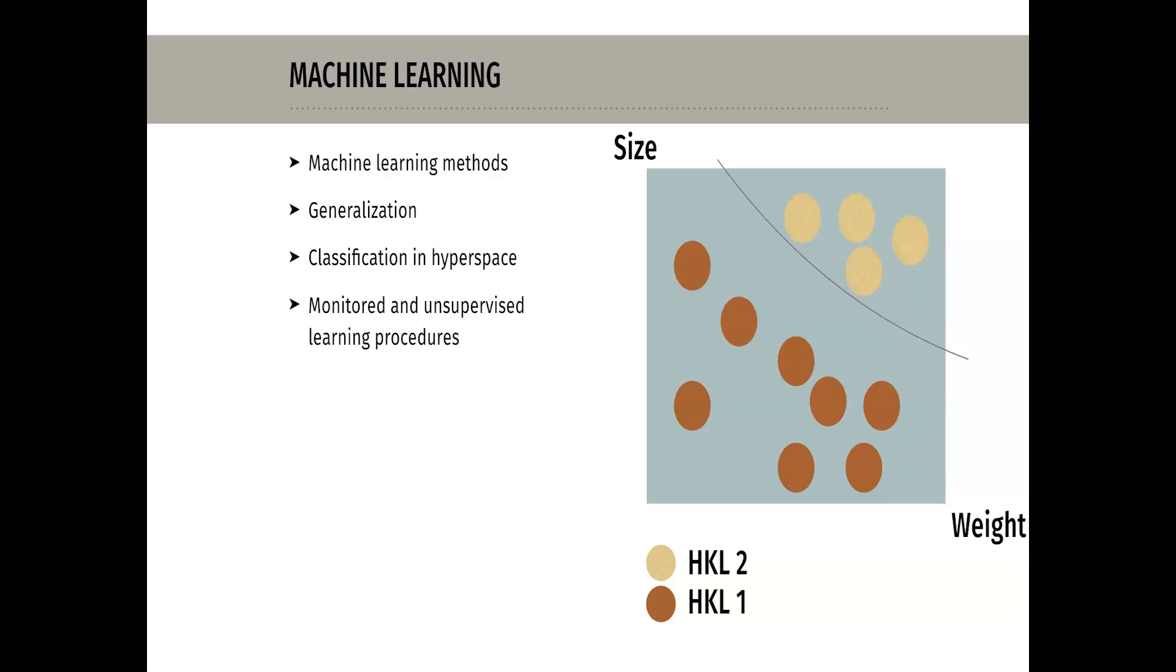Ever since the first computers were developed, there has been a desire for machine learning methods that allow machines to adapt to their environment. However, since computers are far inferior to humans in terms of learning ability, research into the mechanisms of learning and the development of machine learning processes is one of the most important areas of artificial intelligence.